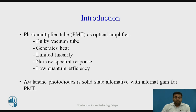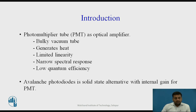For many years, the photomultiplier tube was a well-known solution for optical amplification. However, it has several drawbacks: it is a bulky vacuum tube, it generates heat, it provides limited linearity, narrow spectral response, and low quantum efficiency of about 25%. The alternative to the photomultiplier tube is the avalanche photodiode, which is a solid-state, efficient, and effective alternative with internal gain.